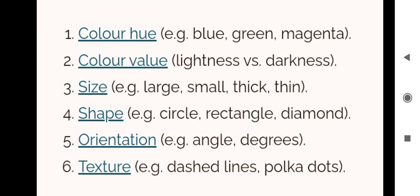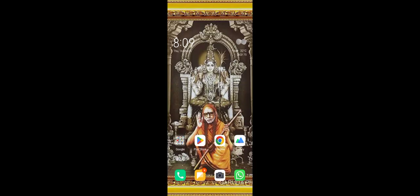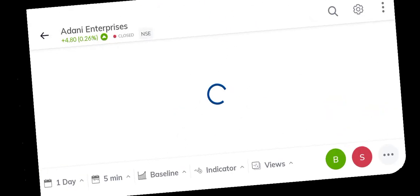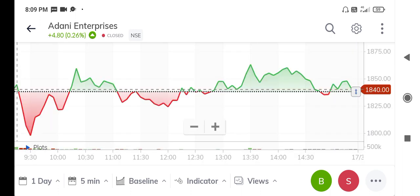Simply, these are the properties. By using these properties only, we are analyzing an object. Now I'll try to explain with one example. See here, I've taken one example - Adani Enterprises.